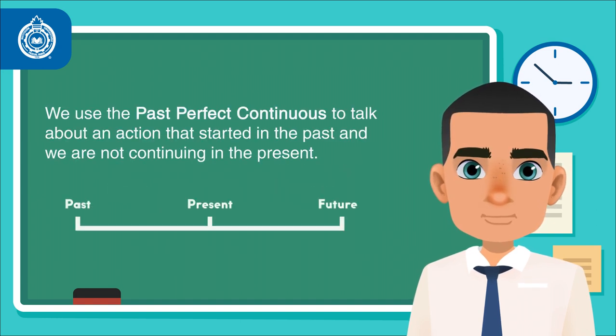We use the past perfect continuous to talk about an action that started in the past and we are not continuing in the present.